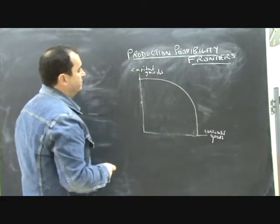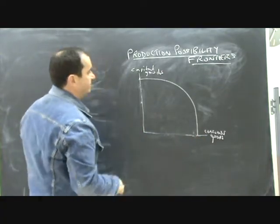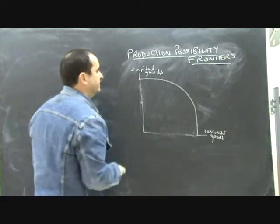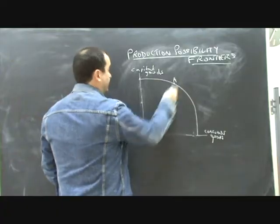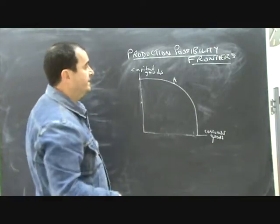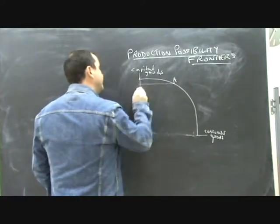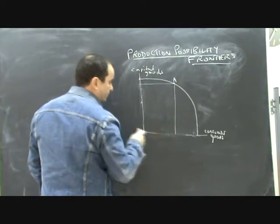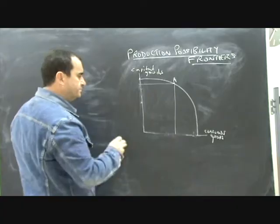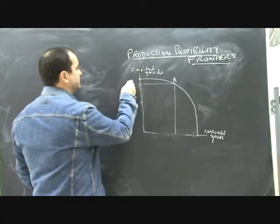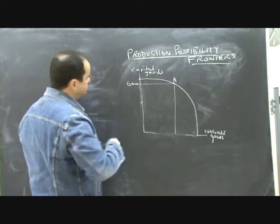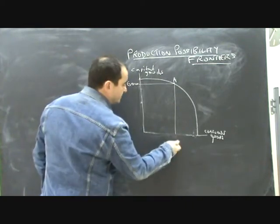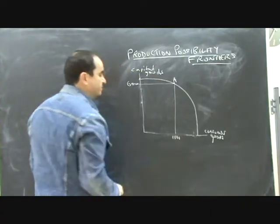A PPF which describes a country's potential output for capital and consumer goods given its resources. Let's say that the country's currently producing at point A. It's being very efficient because it's on the PPF and it's producing this quantity of capital goods and this quantity of consumer goods. Let's put some numbers on this. Let's say that this is 600 capital goods. Simultaneously, some resources are being used to produce consumer goods. Let's say that's 1,000 consumer goods.